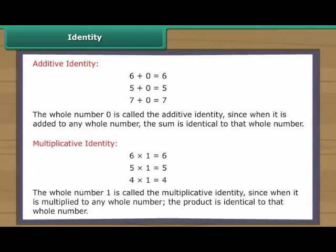The whole number 1 is called the multiplicative identity. Since when it is multiplied to any whole number, the product is identical to that whole number.